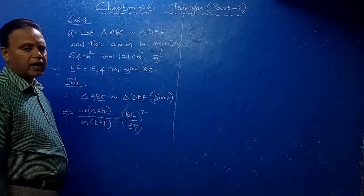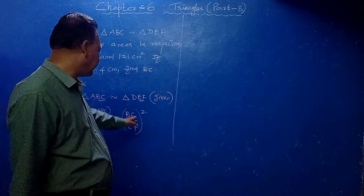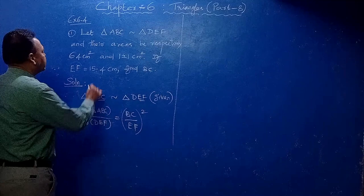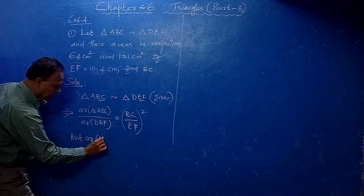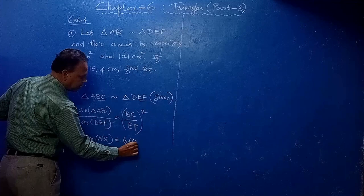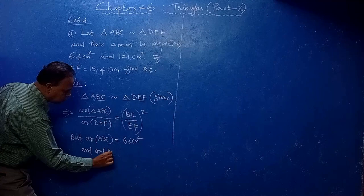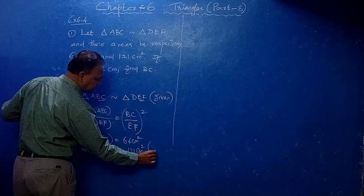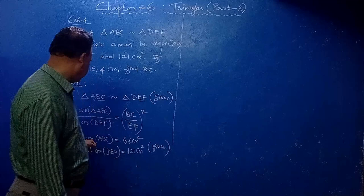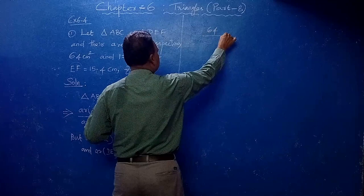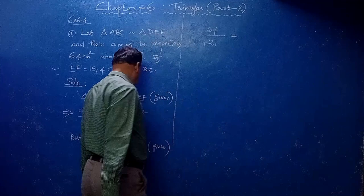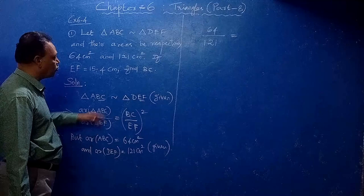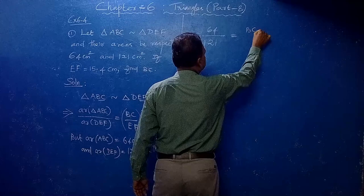You can write it as BC squared by EF squared — either form you can take. Now substitute: area of ABC is 64 cm², area of DEF is 121 cm², and EF is 15.4 cm. So: 64 by 121 equals (BC by 15.4) whole squared.